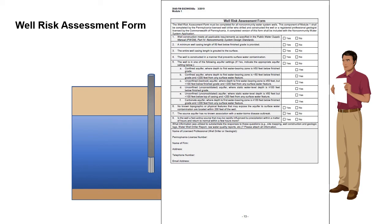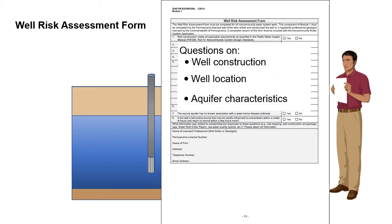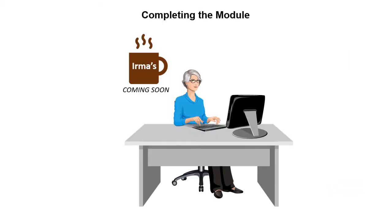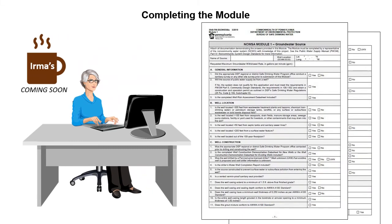The form consists of a list of questions regarding well construction, well location, and aquifer characteristics. The department uses this form, along with other information provided in Module 1, to determine if the well source is susceptible to surface water contamination. The final piece of Module 1 that we have yet to cover takes us back to pages 1 and 2 of the Module.